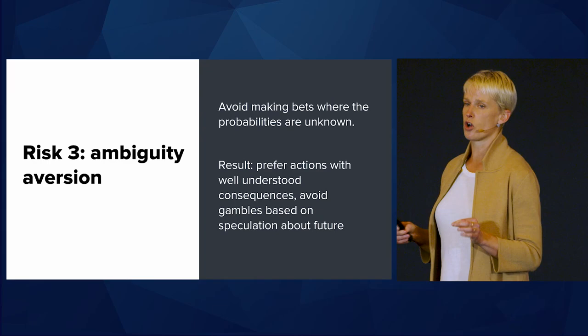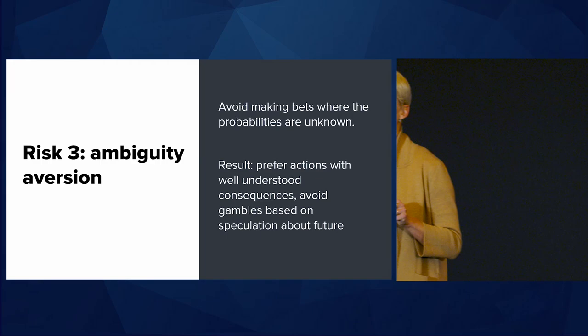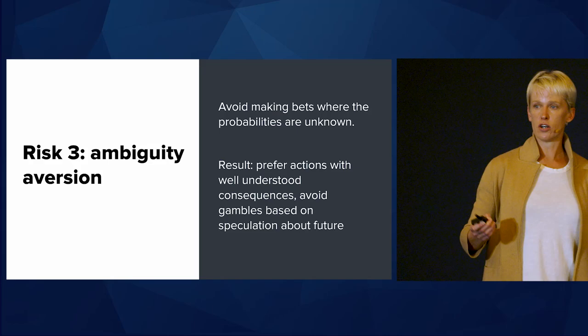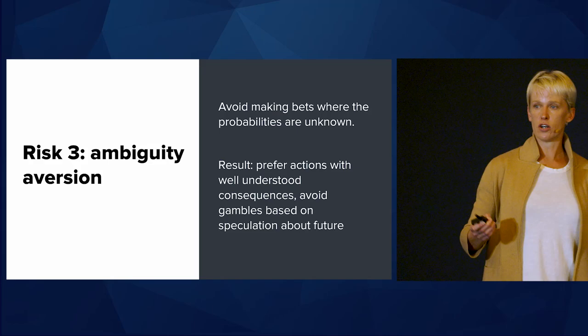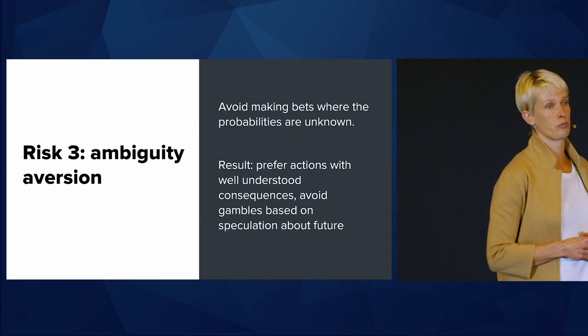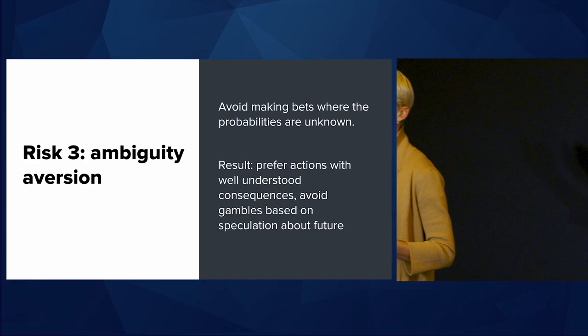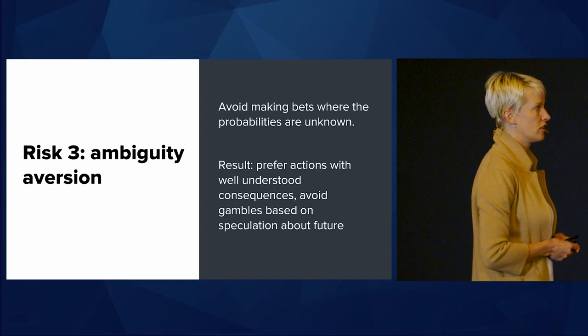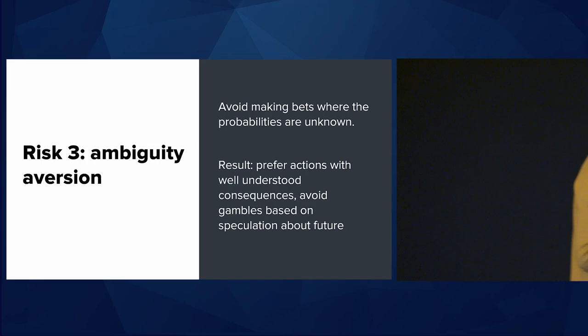A second kind of risk aversion is being really concerned that your actions make a difference — being really inclined to avoid situations where you've thrown your money away and either made no difference or made things worse. As a result, you'd be less inclined towards actions with a low probability of success or a high probability of backfiring. The last kind we studied is ambiguity aversion — an aversion to uncertainty. If you're risk-averse this way, you don't like taking bets when you don't know the probabilities involved, when there's a lot of uncertainty about what the outcomes are. Ambiguity-averse individuals prefer actions with well-understood consequences and avoid gambles based on ignorance and speculation about the future.